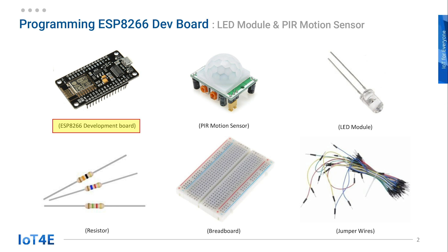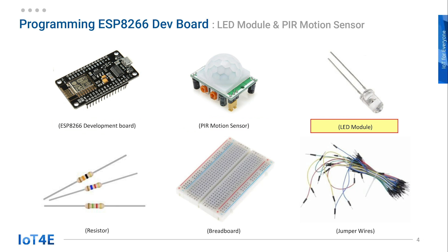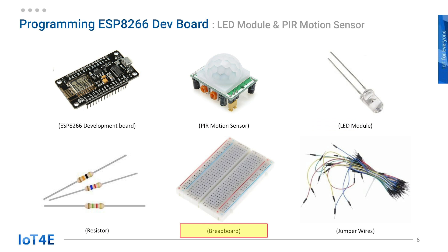We will need the following for this lesson: an ESP8266 development board, a PIR motion sensor, an LED module, a 220 ohm resistor, a breadboard, and some jumper wires.